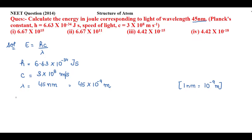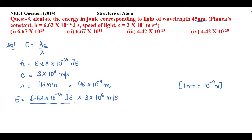Now let's substitute the values: E equals h × c divided by λ, that is 6.63 × 10⁻³⁴ joule·second multiplied by 3 × 10⁸ meter per second, divided by 45 × 10⁻⁹ meter. We can cancel meters with meters and seconds with inverse seconds.